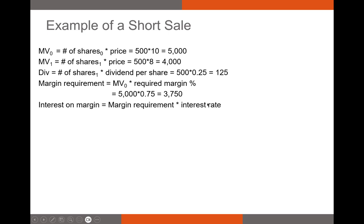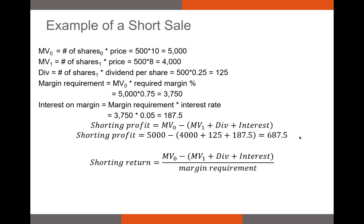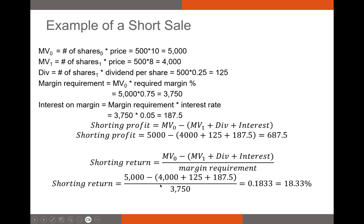Interest is the margin requirement times the interest rate: $3,750 times 5% equals $187.50. Our shorting profit is $5,000 minus $4,000, minus $125 in dividends, minus $187.50 in interest, giving a shorting profit of $687.50. To calculate the return, we divide $687.50 by our initial margin of $3,750, which gives us 18.33%, or an 18% return — not bad.